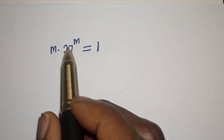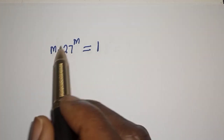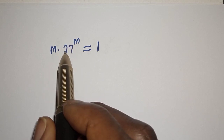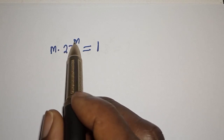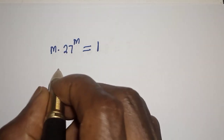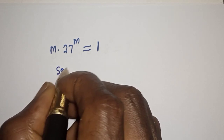Hello, welcome to Magis. In this class I want to find the value of m from this beautiful equation: m multiplied by 27 raised to power m is equal to one.